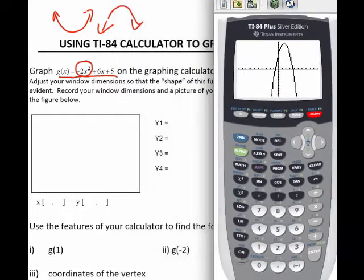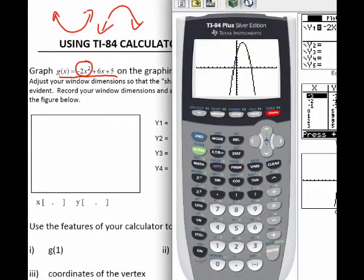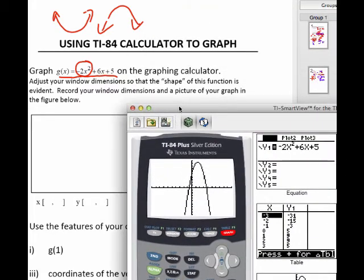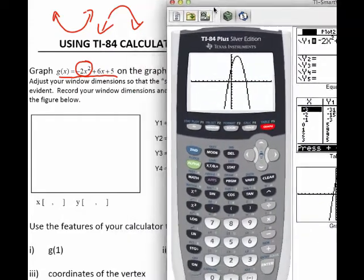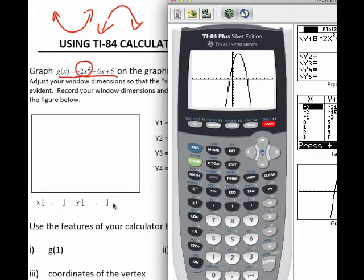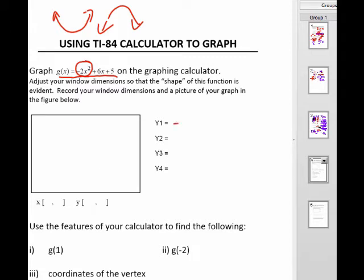And typically what you'll be asked to do is to adjust your window so that the shape of this function is evident, which in this case is a parabola. So using a 10 by 10 window, that's happening automatically. And what we'll typically ask you to do in terms of just recording your work is to show your viewing window in this grid over here.